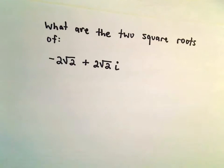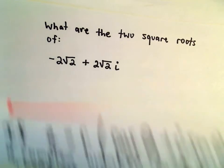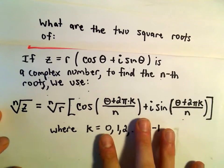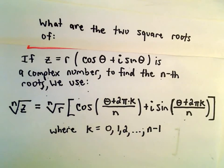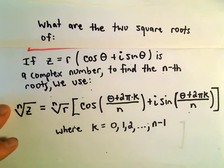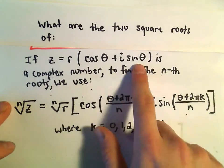So here we want to find the two square roots of negative 2√2 plus 2√2i. And again, we're going to use the same formula that we saw in a previous video.